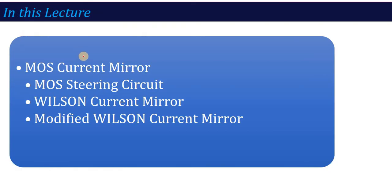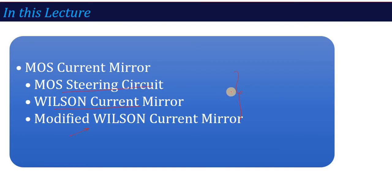In this lecture, we are going to talk about the MOS current mirror, but we will focus on the MOS current steering circuit — what it is, and how the same current can be steered to different locations. Then we will talk about the Wilson current mirror, which is a variant of the current mirror, its problem, and the modified Wilson current mirror. Let's start our lecture on MOS steering circuit and Wilson current mirror.